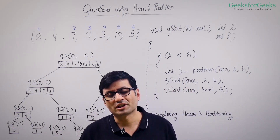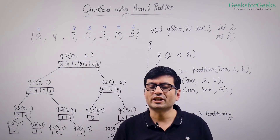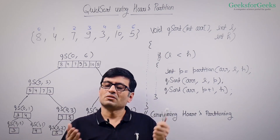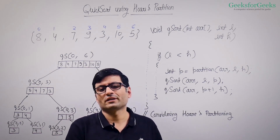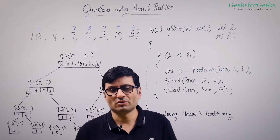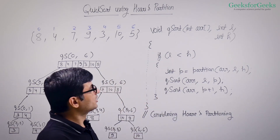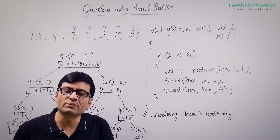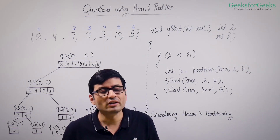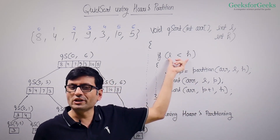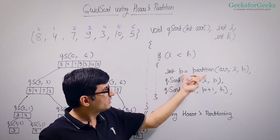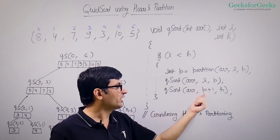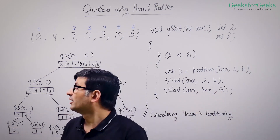In quicksort, the main function is the partition function that partitions the array around the pivot. Once partitioning is done, you just recursively call the left part (smaller or equal) and the right part (greater than or equal). The base condition says there should be at least two elements to sort — l smaller than h. When that's the case, you find the partition point, then call quicksort from l to p and from p+1 to h.